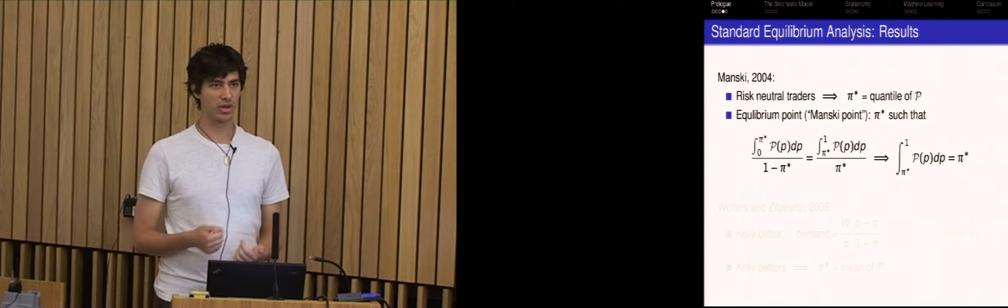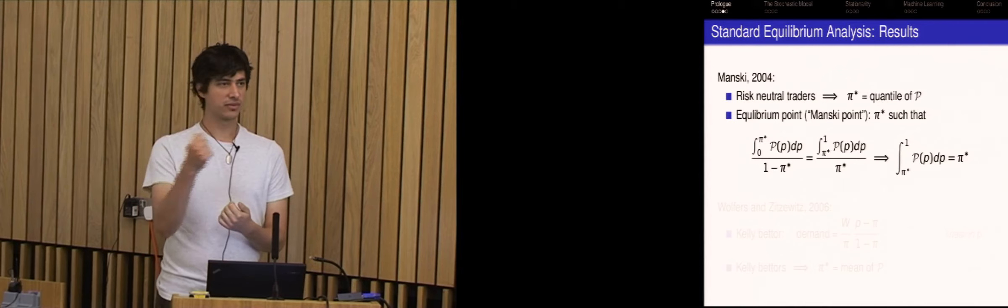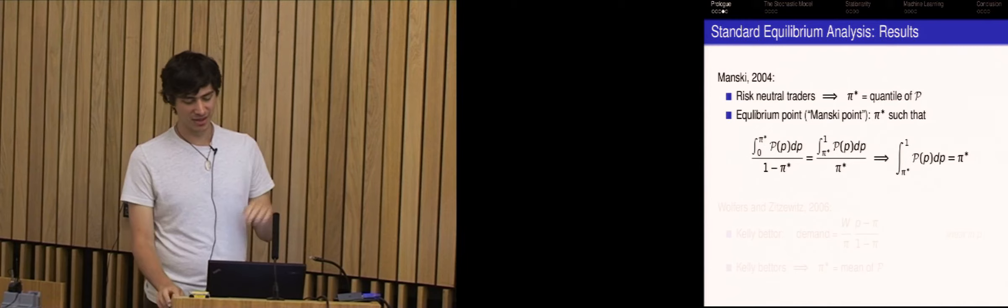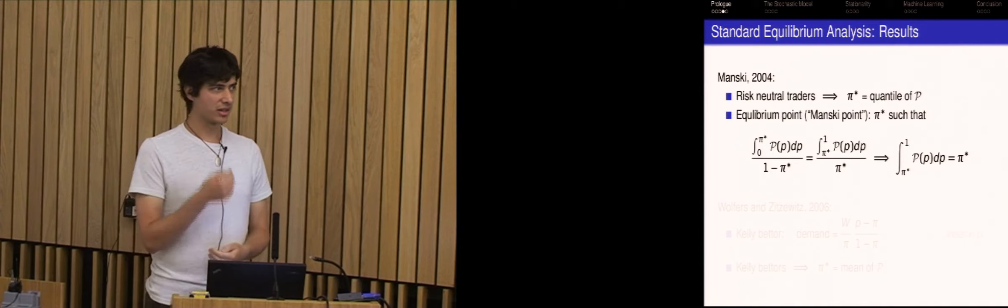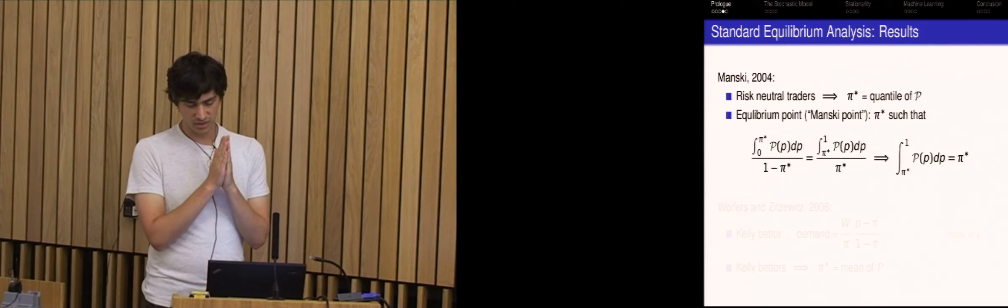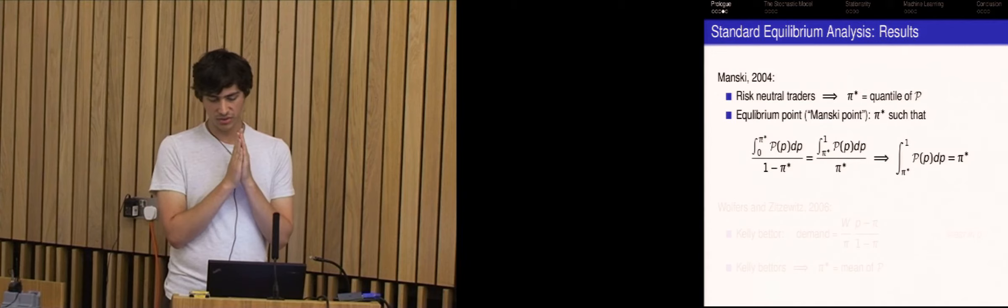And the total mass is just the integral of this distribution up until pi star. And say everyone has wealth one, then they purchase one over one minus pi star of those contracts. This is the total number of shares for Romney. So the price is summed to one. So the price of the Romney contract is one minus pi star. And similarly, if the price is above your belief, on the flip side, the contracts cost pi and you integrate the other side of the distribution. And if you work it out, then you get this peculiar quantile which says that the total mass of traders with belief above pi star is equal to pi star.